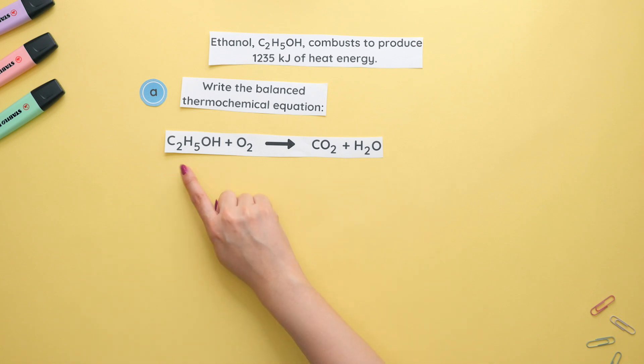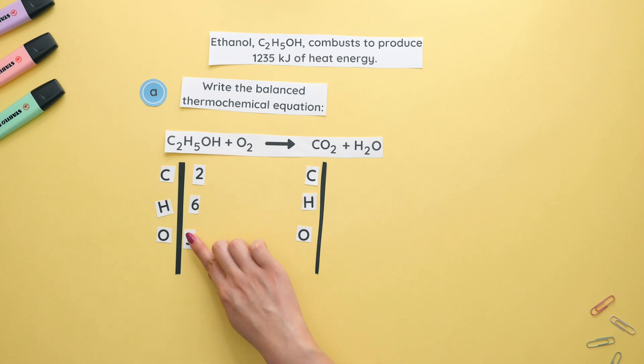Our first reactant is ethanol since that was provided in the question. Now we'll balance this out by separating each element and counting how much of each element there is on either side. On the reactant side we have two carbons, six hydrogens since we have five here and one more at the end of ethanol and we have a total of three oxygens since we have one here and two here.